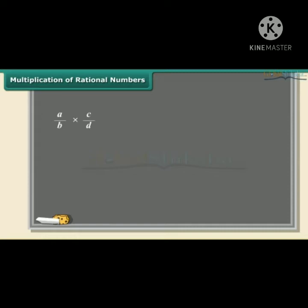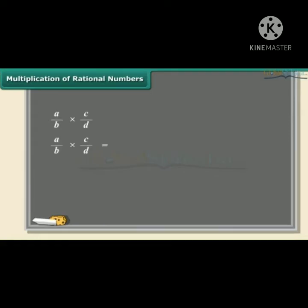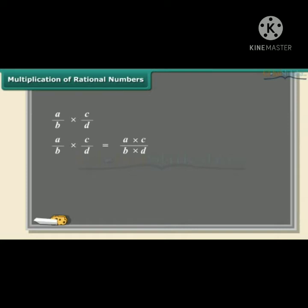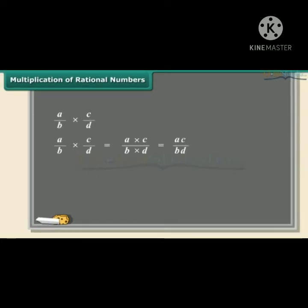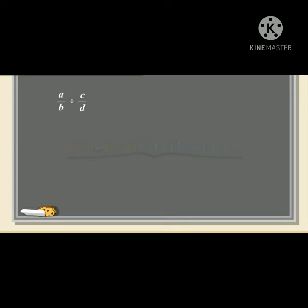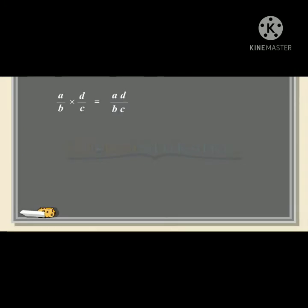How to multiply any two rational numbers? It's very easy. To multiply any two rational numbers, we will just multiply numerator with numerator and denominator with denominator to get the result. For division of any two rational numbers, just flip the second rational number and change the sign of division into multiplication. After doing that, it becomes similar to multiplication — multiply numerator by numerator and denominator by denominator.